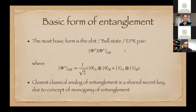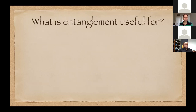What that implies is that a third party cannot figure out anything about the outcome of local measurements on A and B. A classical secret key is that the bits are both 00 or 11 with probability one half — uniformly random, perfectly correlated, and independent of any third party. From an entangled state like this you can prepare a secret key, but the reverse process is not possible.